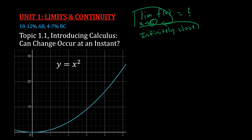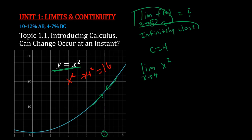Let's say we have the simple graph Y equals X squared, and we're trying to find the limit of X squared as X approaches 4, so C equals 4. As we get infinitely close, what is the Y value the function produces? When we plug in 4 squared, we get 16. So the limit as X approaches 4 of X squared is equal to 16.